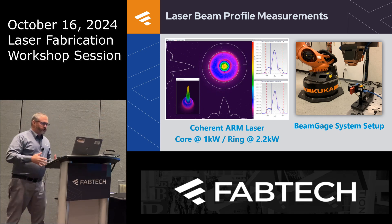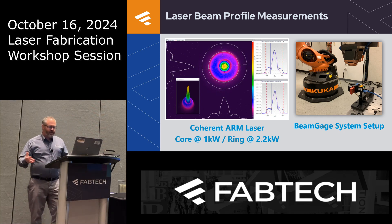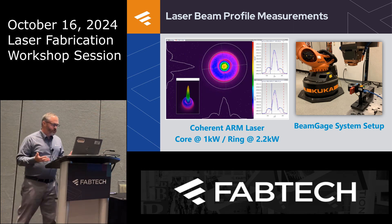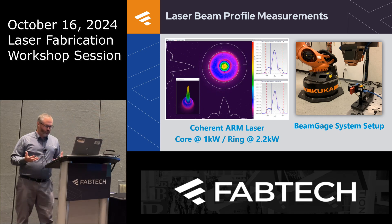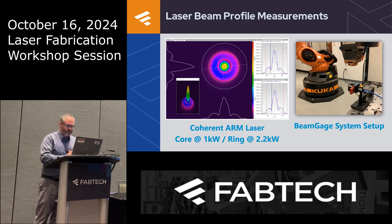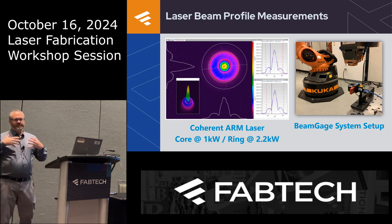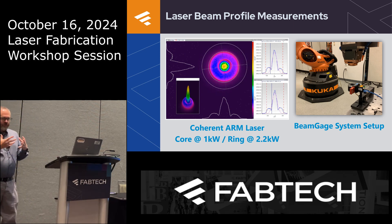Now we move to the bottom of the equation — the beam profile. This example is a coherent ARM laser with the core programmed at one kilowatt and the ring programmed at 2.2 kilowatts, measured at the KUKA lab in Sterling Heights, Michigan. This example illustrates that beam size really does have an effect on your process.